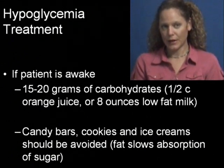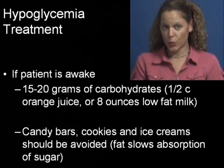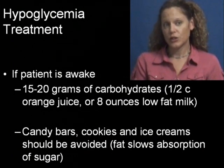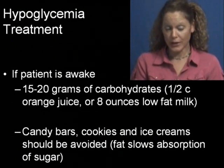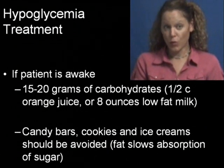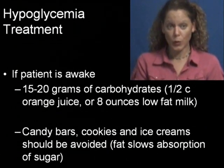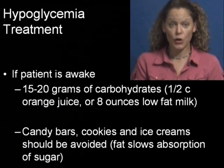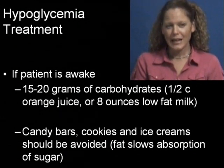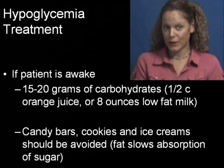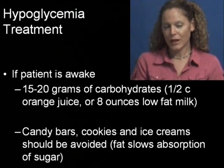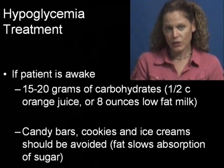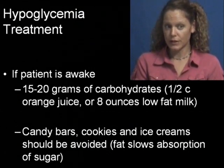Treatment for hypoglycemia, if the patient is awake, would be 15 to 20 grams of carbohydrates. This would be half a cup of orange juice, which is about 120 mLs, or 8 ounces of low-fat milk. Candy bars, cookies, and ice cream should be avoided because fat slows down the absorption of sugar.